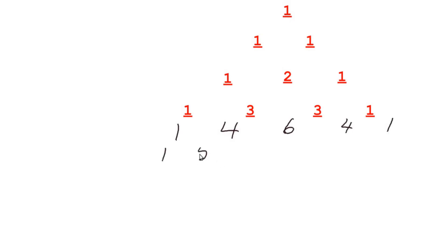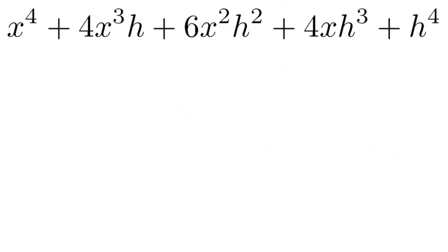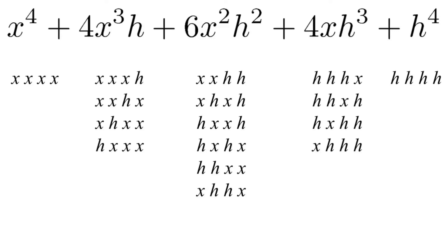The next row would be 1, 5, 10, 10, 5, 1. But what else could these coefficients mean? How many ways can we arrange x's and h's? If I have 4 x's, there's only 1 way. But if I have 3 x's and an h, the h could be last, 3rd, 2nd, or 1st — there are 4 ways to arrange 3 x's and an h. Similarly, there are 6 ways to arrange 2 x's and 2 h's. There are 4 ways to arrange 3 h's and 1 x, and of course only 1 way to have all 4 h's — giving the symmetric pattern 1, 4, 6, 4, 1.